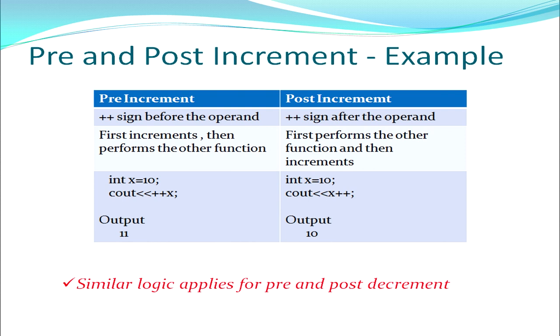In pre-increment, first the value is incremented, then the other operation is performed. In post-increment, first the other operation is performed, then the value is incremented. For example, if x is 10 and I write cout << ++x (pre-increment), the output is 11. But if I write cout << x++ (post-increment), the value is displayed first, so the output is 10. The same logic applies for pre- and post-decrement operations.